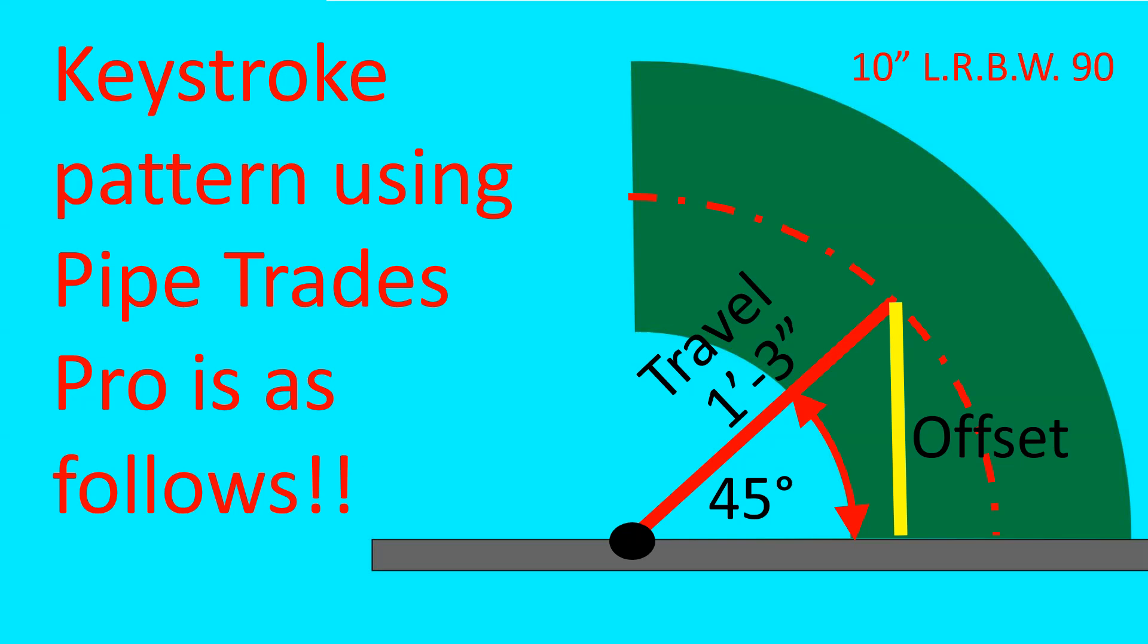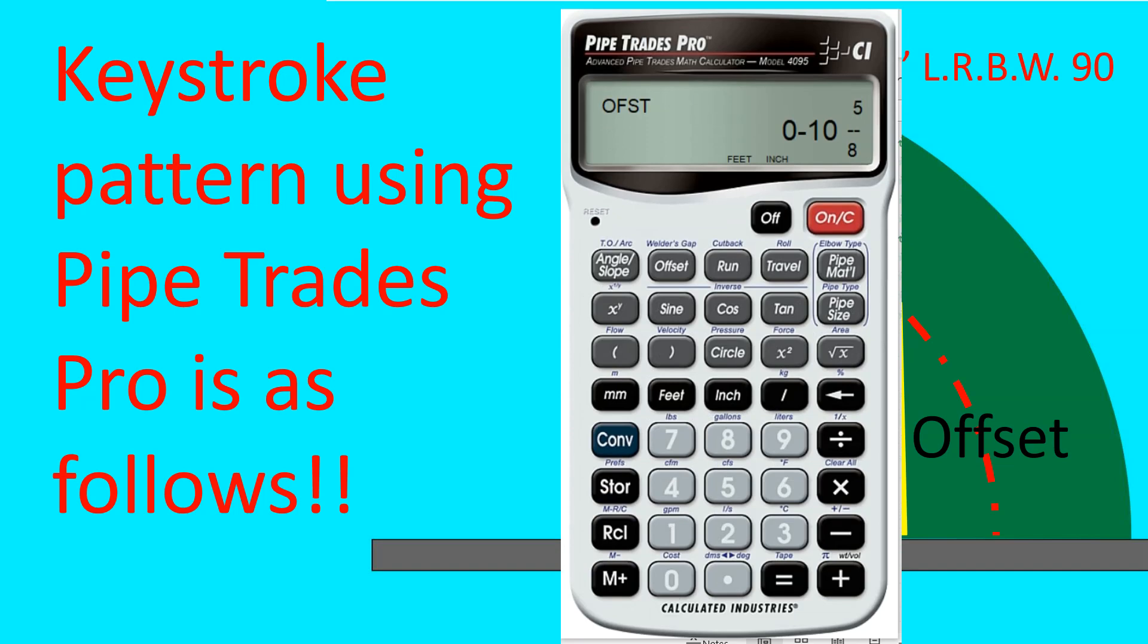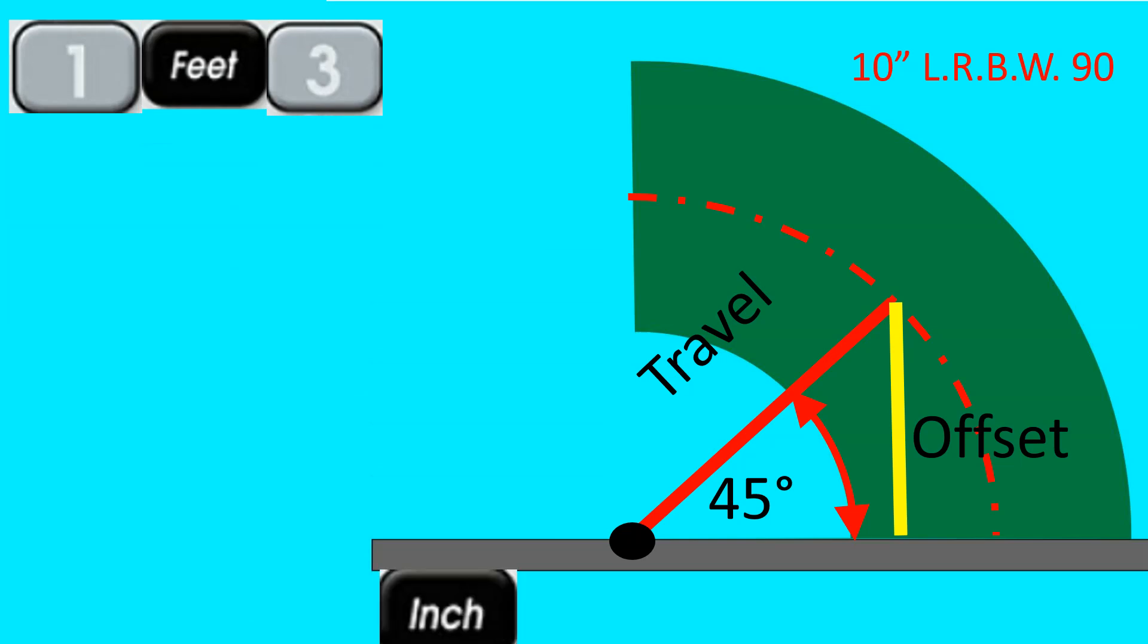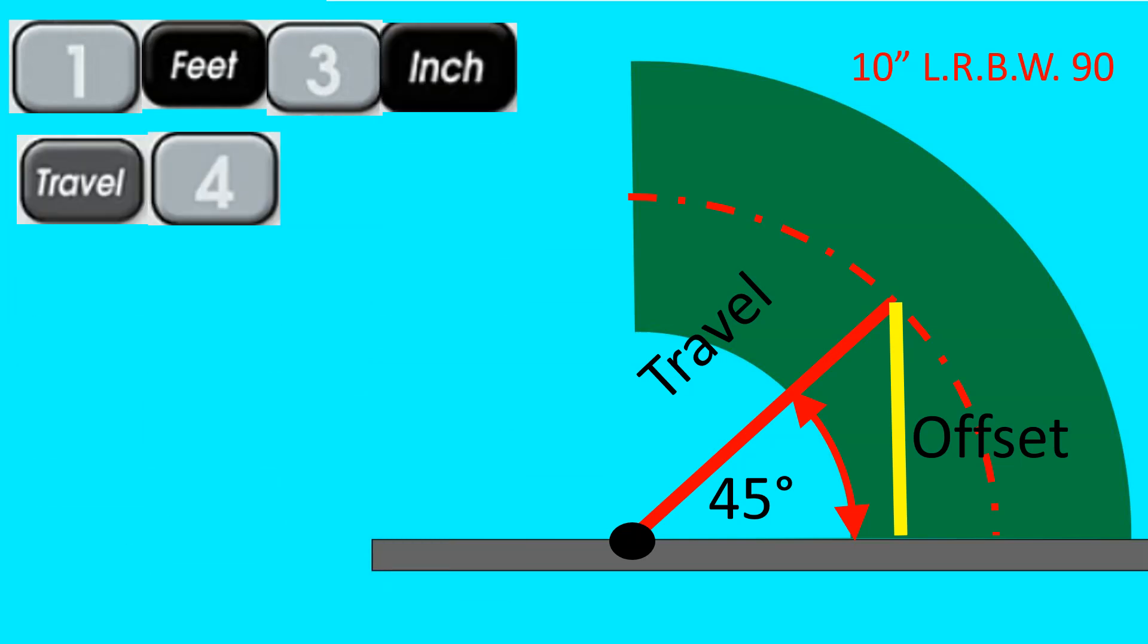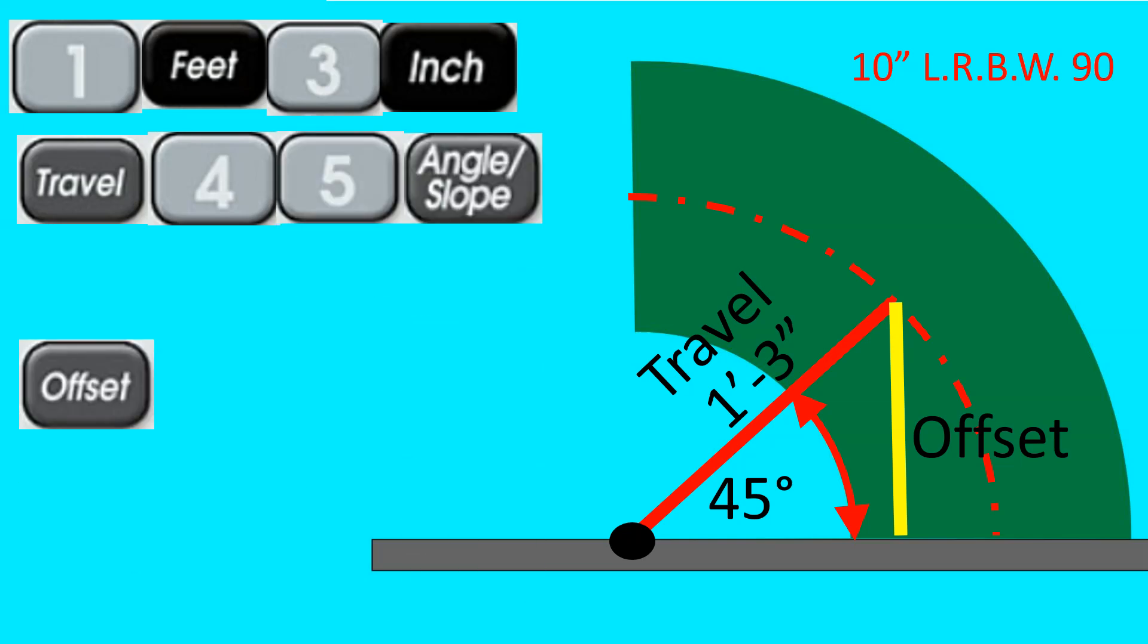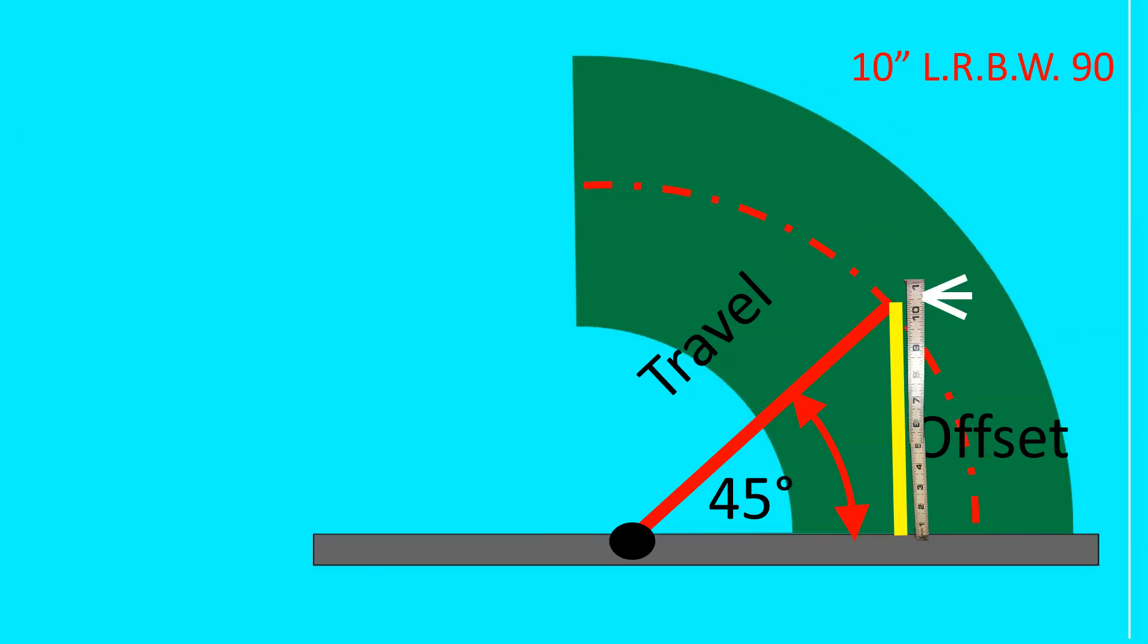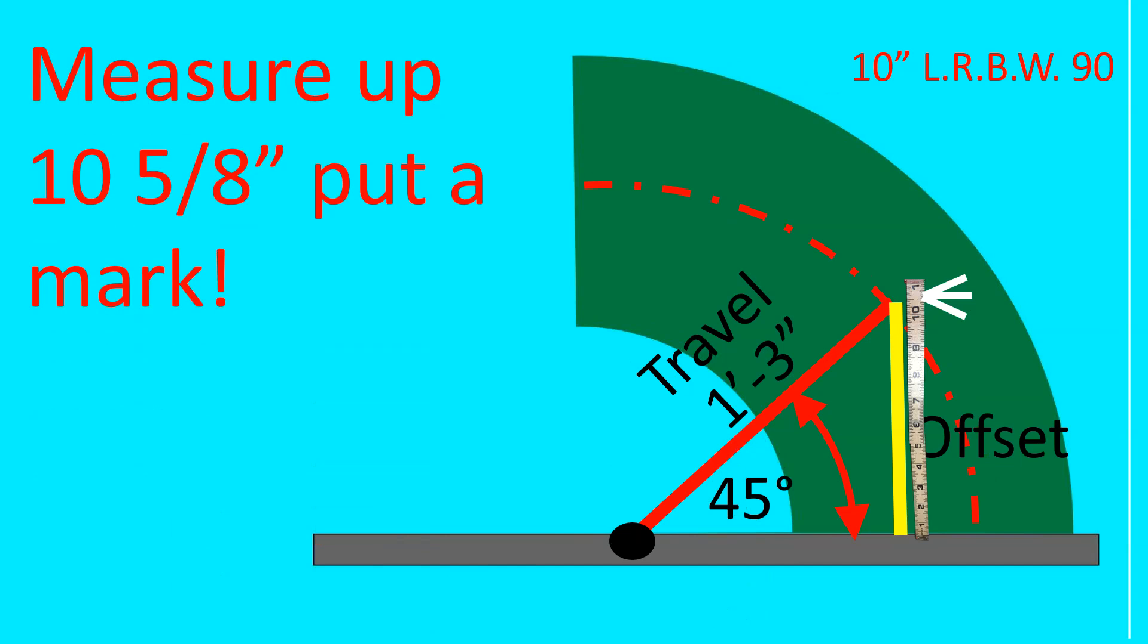The keystroke pattern using the Pipe Trades Pro is as follows. Let's get out of our Pipe Trades Pro. Let's put in 1 foot 3 inch as the travel. 45 as the angle slope. We press the offset. And it gives us 10 and 5 eighths. That's the true number to put that mark right at the top, that center of that fitting.